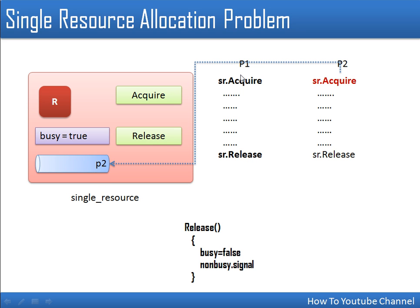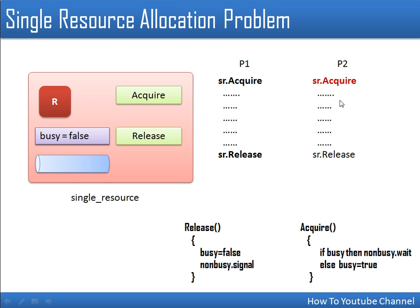When P1's execution is done, it calls the release operation. The release procedure sets busy to false and then calls non_busy.signal(). This signal wakes up P2, which is waiting in the queue. Once P2 is active, it will continue its execution and can now call acquire to use the resource.